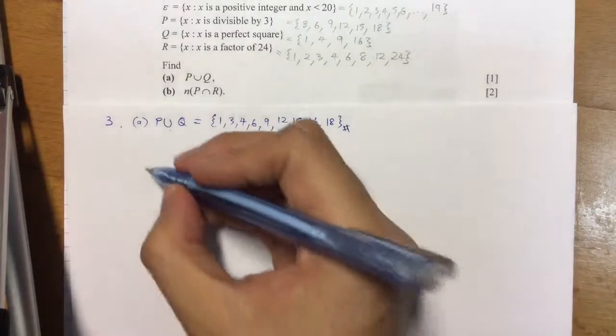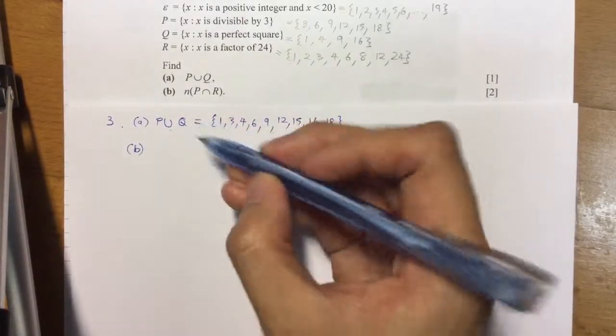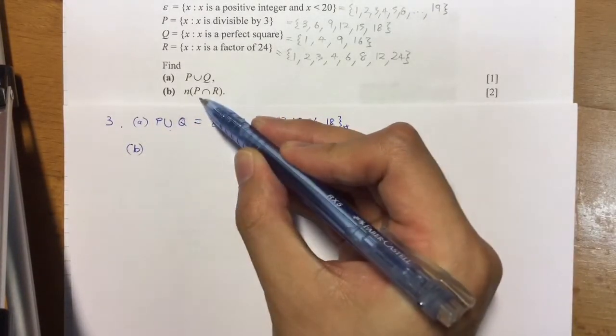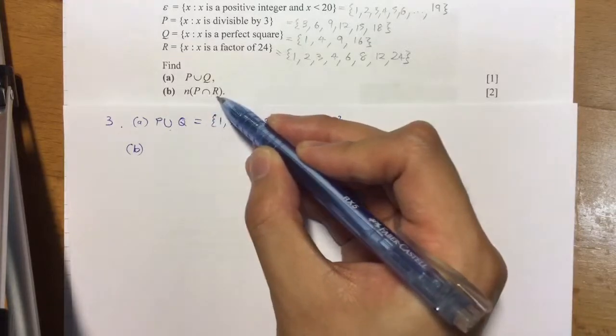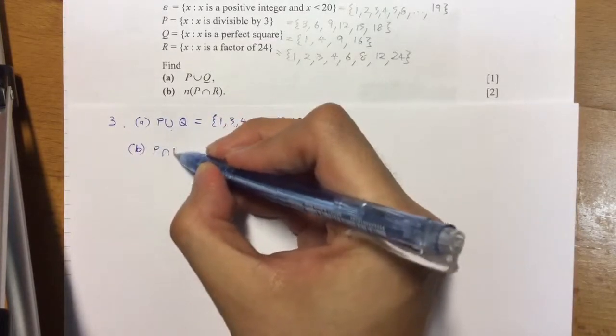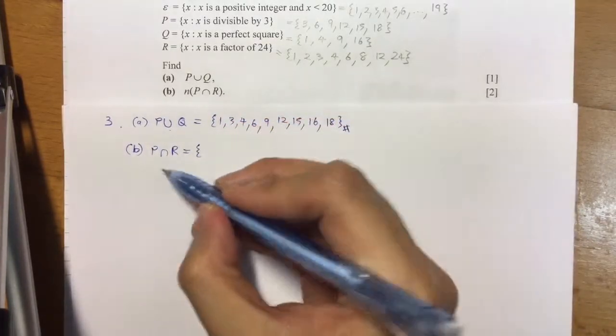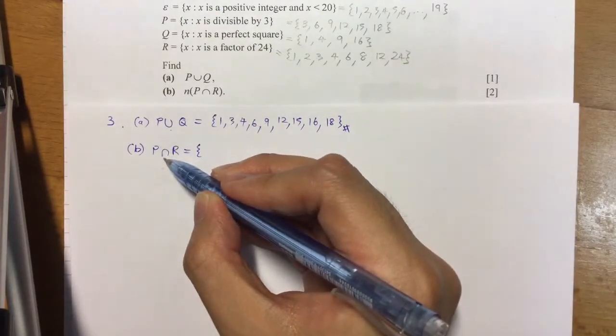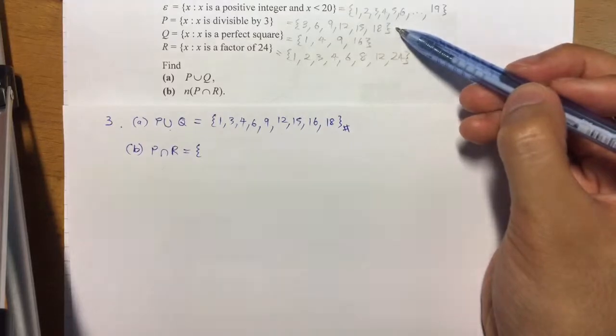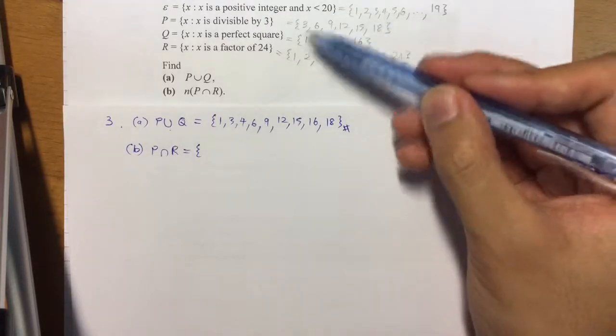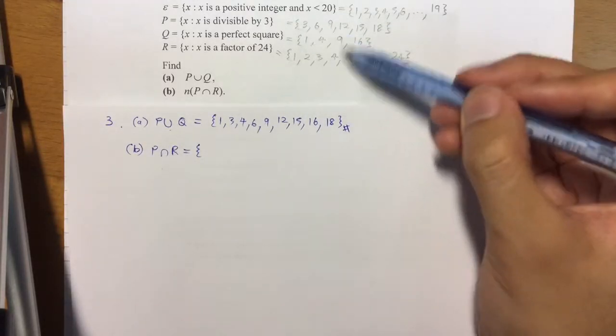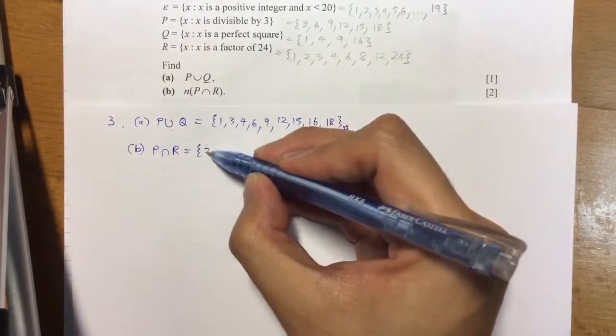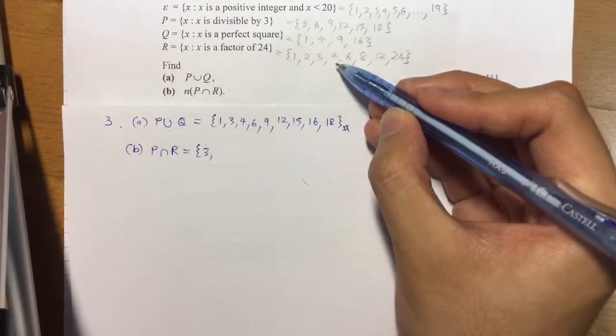Next, the number of elements inside the set of P intersect R. So let us first list down what consists of the set P intersect R. Recall, intersect means in common. So let's take a look at P and R—what numbers are shared between the two? Obviously we have 3, we have 6.